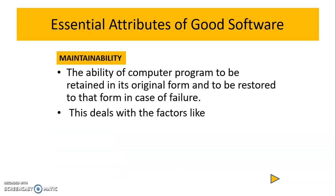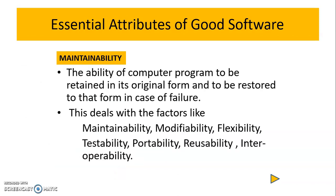The first attribute is maintainability, which refers to the ability of software to be retained in its original form — meaning it should be restorable in case of failures. Maintainability deals with factors like maintainability itself (the ability to locate and fix errors), modifiability (making required changes to the software), and flexibility (the ability of the software to accept changes).